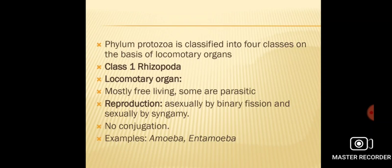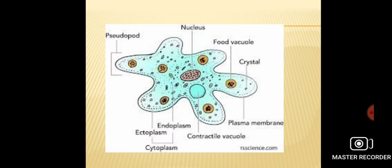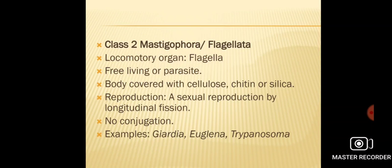In Rhizopoda, asexual reproduction takes place by binary fission, while sexual reproduction takes place by syngamy, but no conjugation takes place in Rhizopoda. Examples of Rhizopoda are Amoeba, Entamoeba, etc.